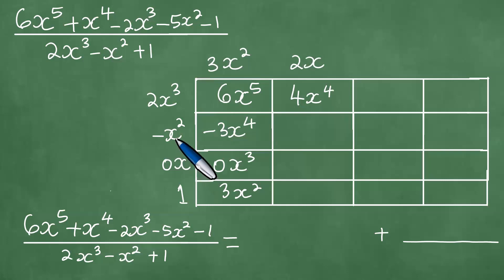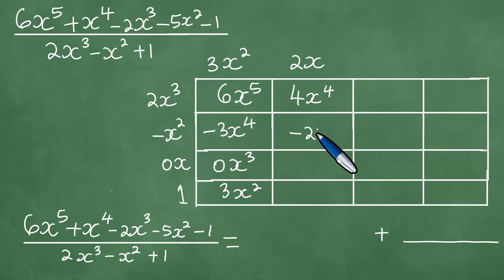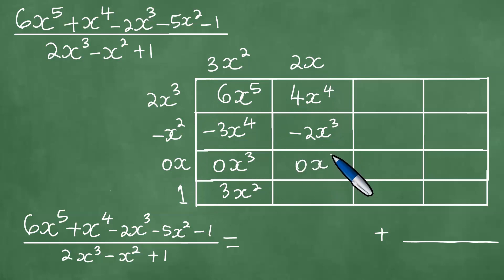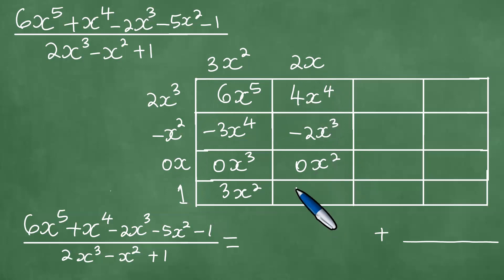Minus x squared by 2x is minus 2x cubed. 0x times 2x is 0x squared. And 1 times 2x gives 2x.